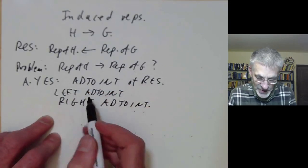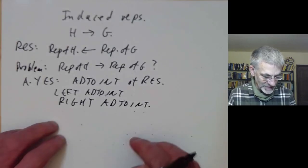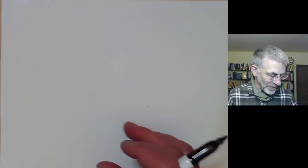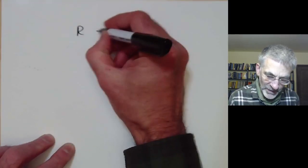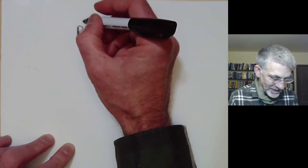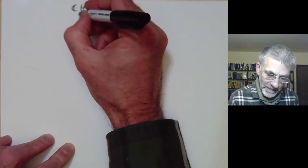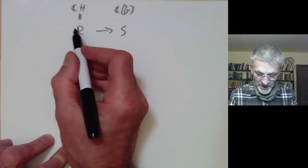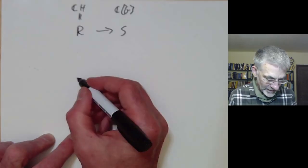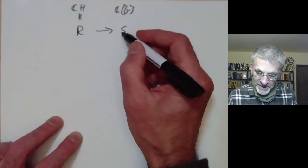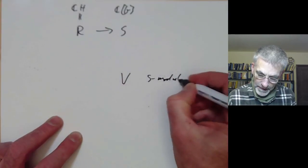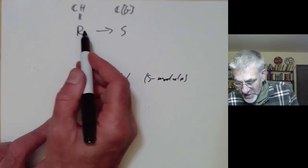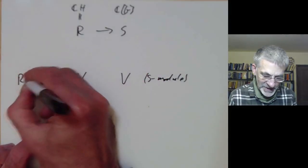These two adjoints give us, in general, two slightly different concepts of induced modules. An easy way to see this is to forget about groups for the moment and look at a homomorphism of the corresponding rings. So we take the group ring of H — over the complex numbers — and the group ring of G. We've got a homomorphism from the group ring of H to the group ring of G. If V is a module over S, we can restrict it to a module over R just by defining the R action using the homomorphism from R to S. So we've got a restriction map.